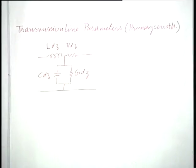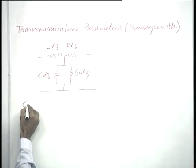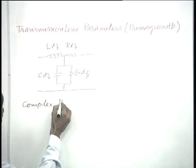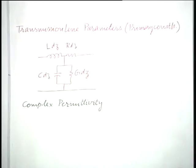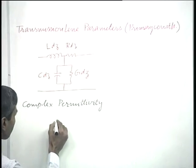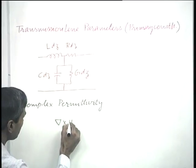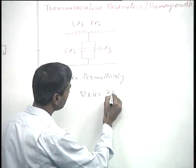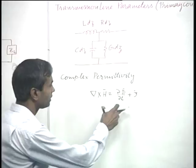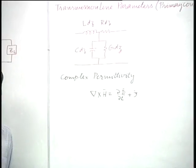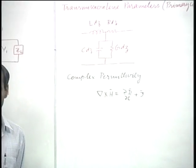Before we take up the calculation of transmission line parameters, a small concept regarding complex permittivity also needs to be introduced. This concept is best introduced by considering Ampere's law in differential form as modified by Maxwell to include the displacement current term, which reads as ∇×H = ∂D/∂t + J, where J is the conduction current term and ∂D/∂t is the displacement current term.